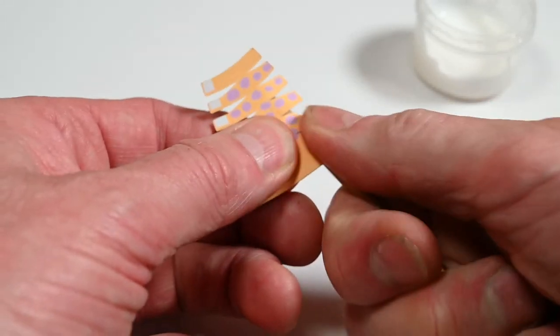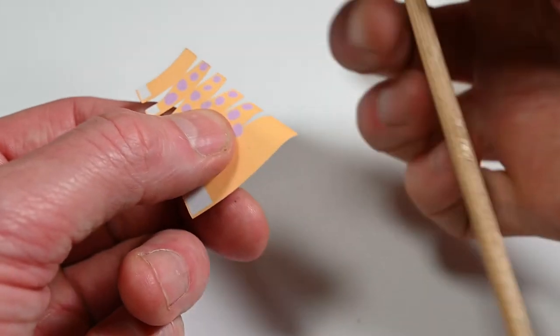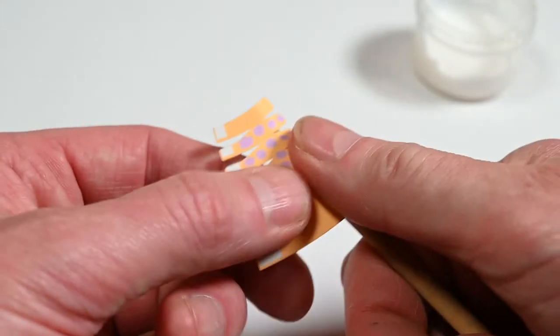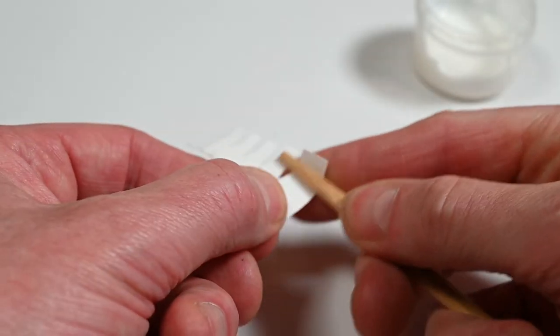So what I'm going to do is before I even start assembling it, is just gently curve them round on this. This is a chopstick. And just curve them round on there. So they're already curved in the right direction. Where I want them.